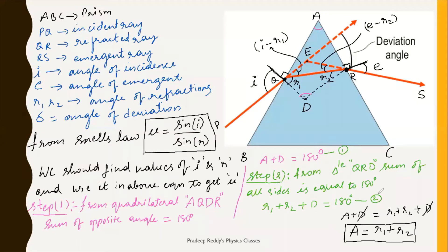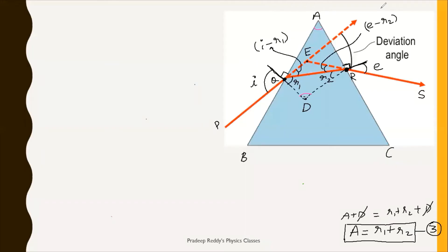Since equation one and equation two both equal 180 degrees, we can equate them: A plus D equals r1 plus r2 plus D. The D's cancel, leaving A equals r1 plus r2. Using steps one and two, we have derived equation three: A equals r1 plus r2.